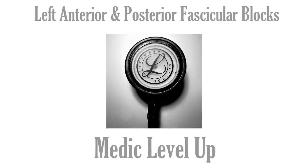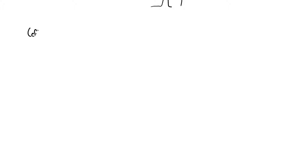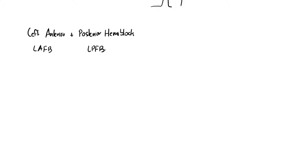Hello everyone, Medical Level Up here. We're back again with another video, and today's video is going to be about left anterior and posterior fascicular blocks. These blocks don't tend to cause a massive increase in the duration of the QRS complex; instead, they cause a shift in the axis of the heart. These are basically the two subdivisions of a left bundle branch.